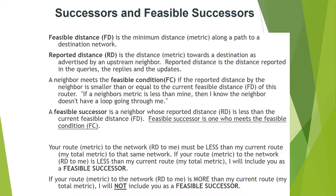A neighbor meets the feasibility condition (FC) if the reported distance it advertises is smaller than or equal to the current feasible distance of the route. If a neighbor's metric is less than mine, then I know the neighbor does not have a loop going through me. A feasible successor is a neighbor whose reported distance is less than the current feasible distance.